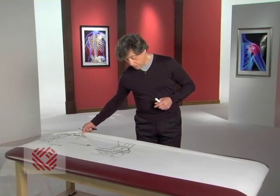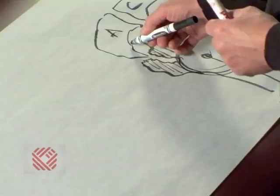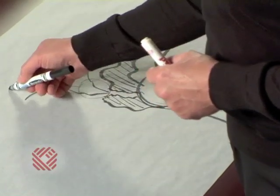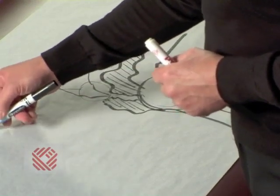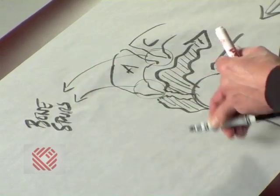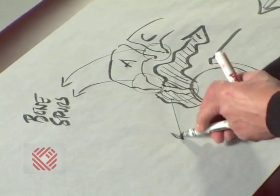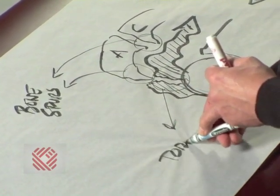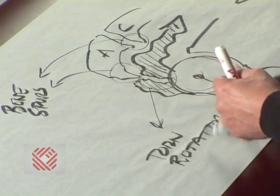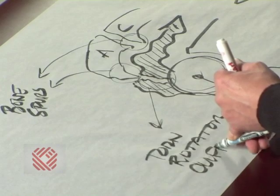So this is your bone spurs and your torn rotator cuff tendon.